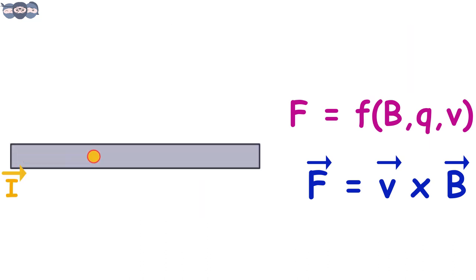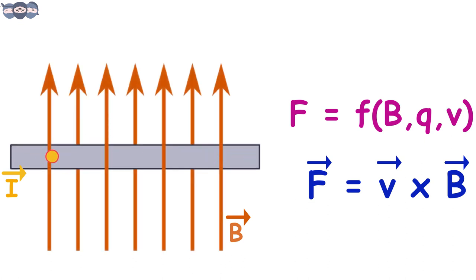In the case of the current, the charged particles are the electrons and they have a specific velocity. When subjected to a magnetic field, they experience a force perpendicular to their velocity and magnetic field, thus deviating from their path.